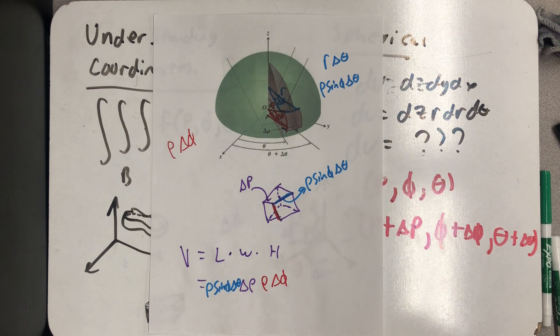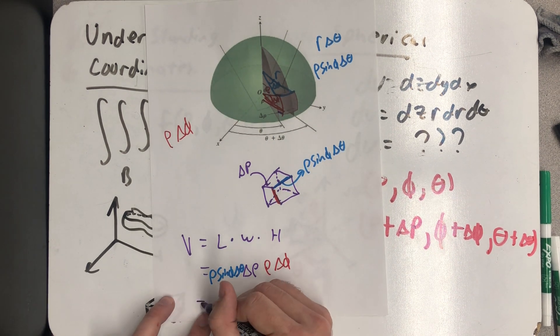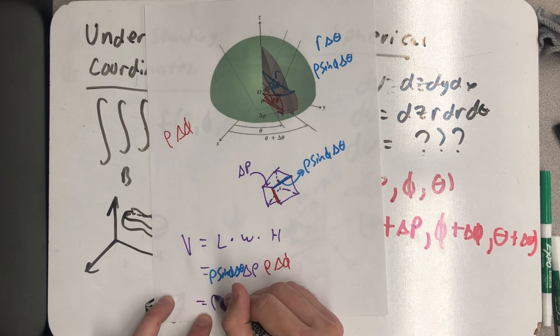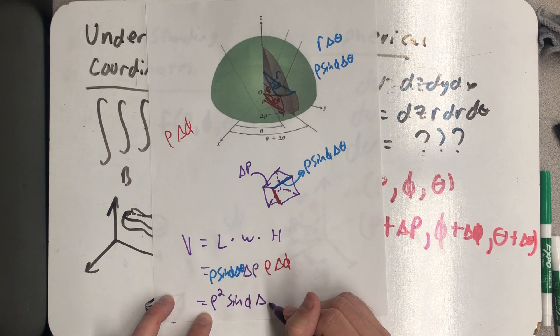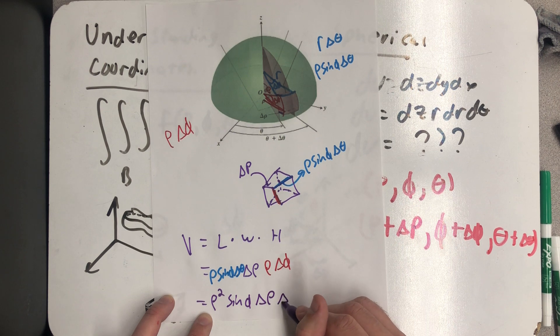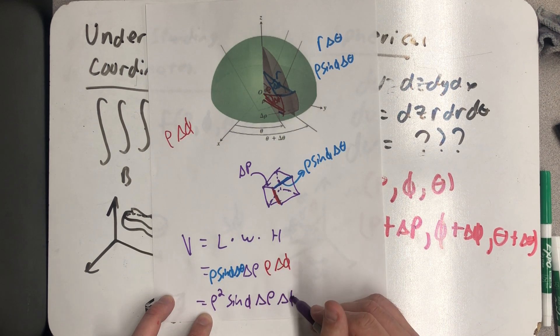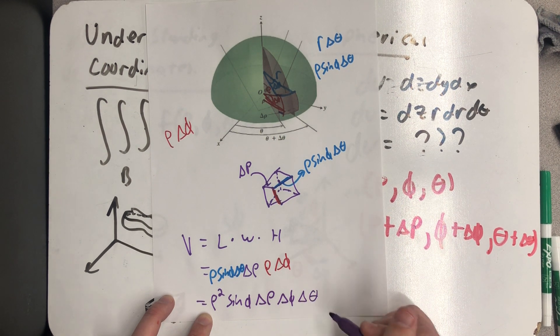So all together, this would be ρ times ρ would give me a ρ² sin φ. And I like the order Δρ, Δφ, Δθ.